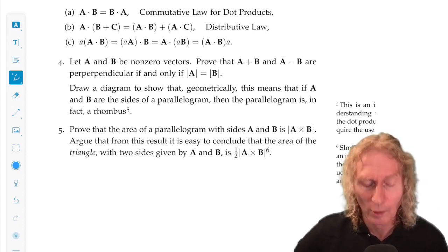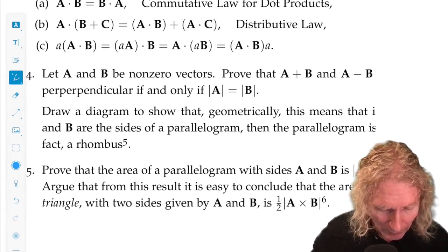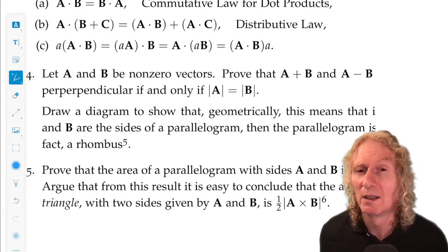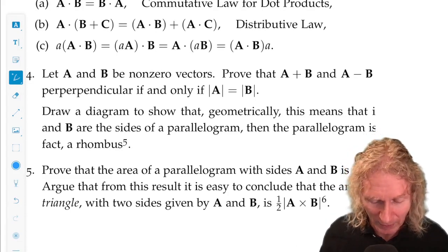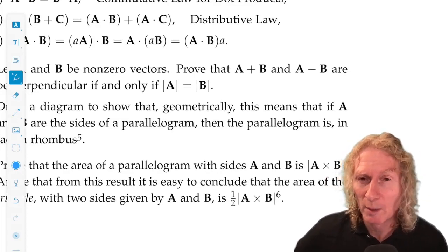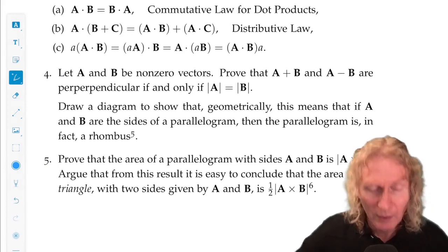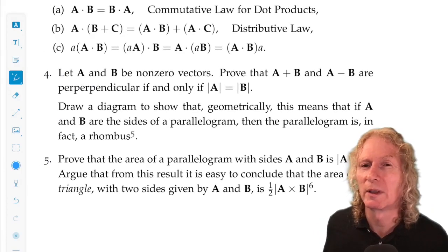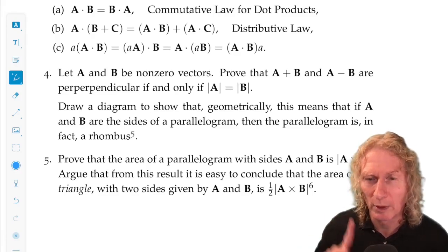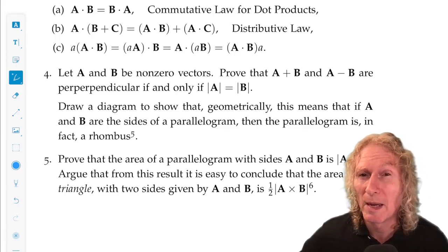Now four and five are a bit more fun. So four is: let A and B be two non-zero vectors, otherwise it's not interesting. And prove that the vector A plus B and the vector A minus B, these are perpendicular vectors. How do we know perpendicular, deal with perpendicular? Cross product. If and only if they have the same magnitude.